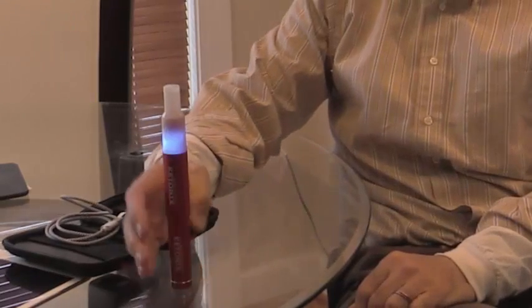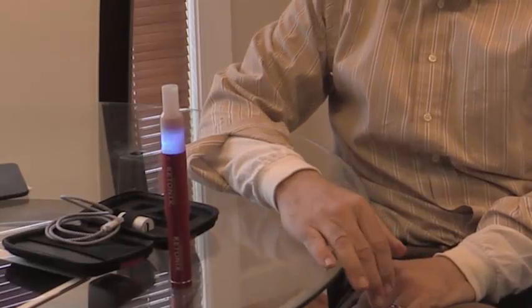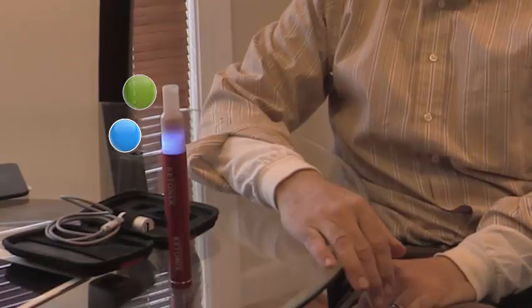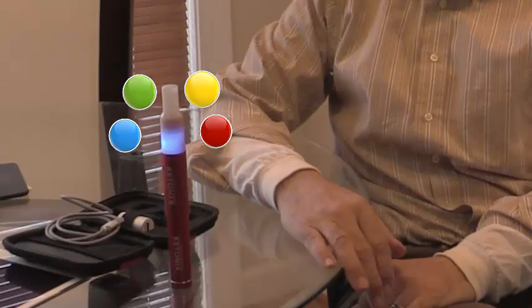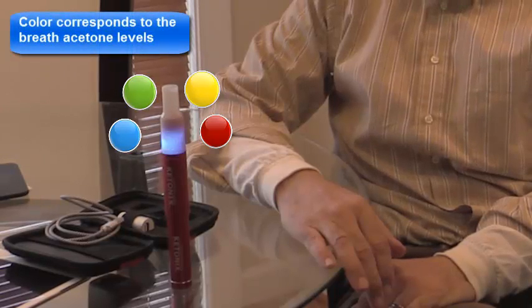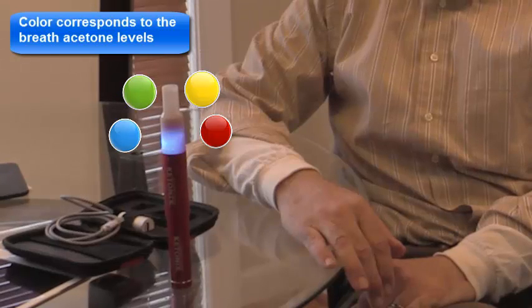Now let's talk about the lights. This is enabled with four different color lights. You have blue, green, yellow, and red. And each one of those levels corresponds to a different level of breath acetone. It will fluctuate throughout the day.